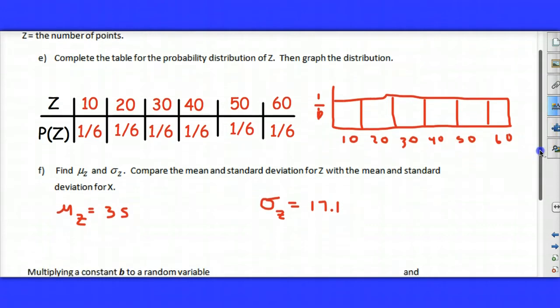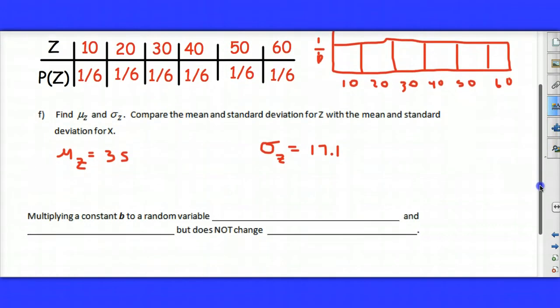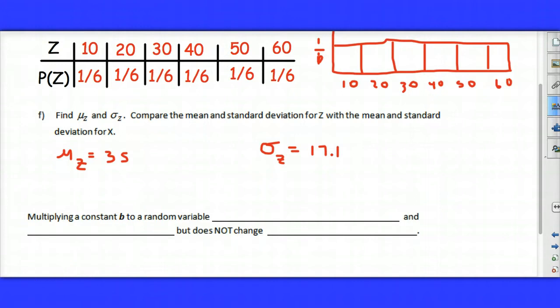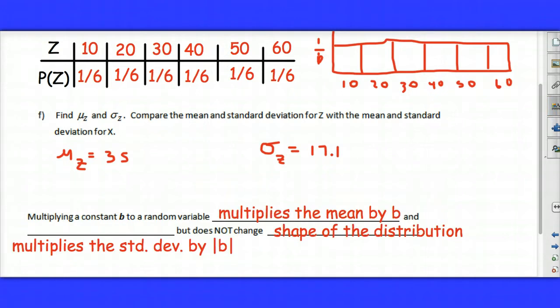So in this case, our standard deviation actually did change. So it appears that multiplying a constant b to a random variable multiplies the mean by b and multiplies the standard deviation by the absolute value of b. And the only reason I say absolute value of b here is if b were to be a negative value, it's not going to make the standard deviation become negative because we know we can't have a negative standard deviation. So we say the absolute value of b and we notice that the shape of the distribution does not change.